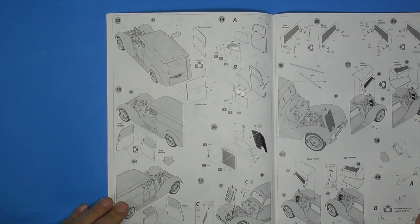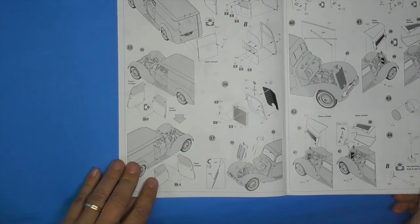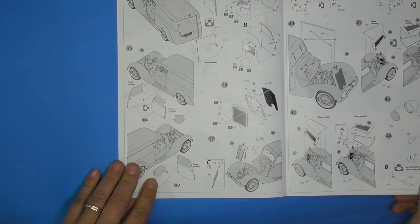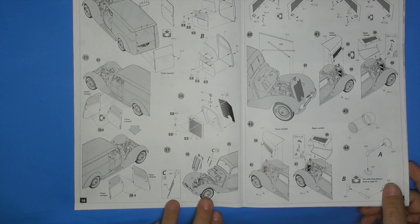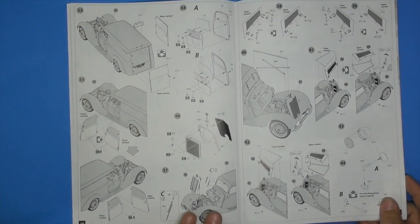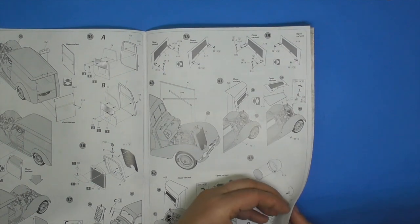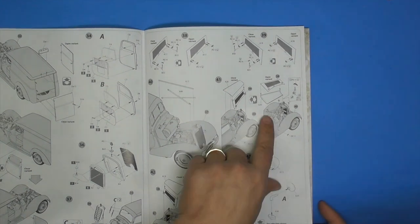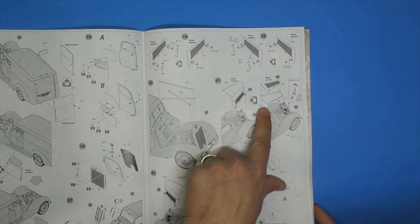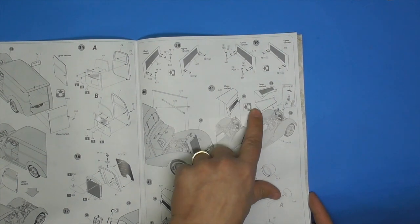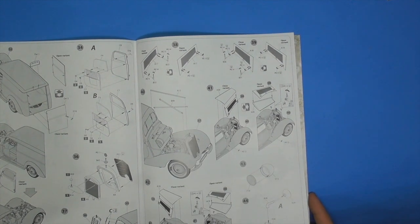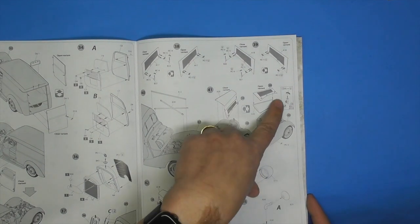And door. Open variant and closed variant for the door. Radiator. And there's your hood. And your side panels for your hood, which you can do open or closed. Well, I guess if you do it open, it folds into there, so you wouldn't see those ejector pin marks anyway. Clever. There's the handles.